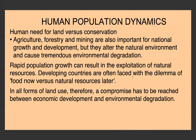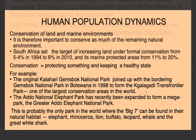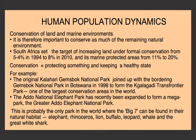It's therefore important to conserve as much of the remaining natural environment as possible. South Africa set a target of increasing land under formal conservation from 5% in 1994 to 8% in 2010, and marine protected areas from 11% to 20%. Under Schedule 4 of the Constitution, provinces and the national government share environmental responsibility, committed to sustainable development — meeting the needs of the present without compromising the needs of future generations. In 2005, environmental management inspectors — the green scorpions — were formed to enforce environmental laws.